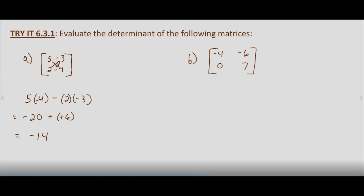In part B, we have negative 4, negative 6, 0, 7. So again, multiply top left by bottom right: negative 4 times 7, subtract the product of bottom left times top right.